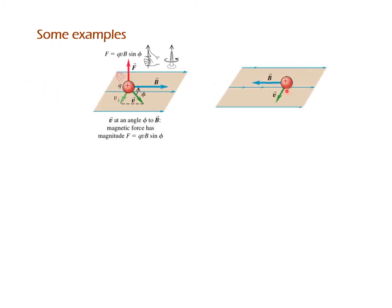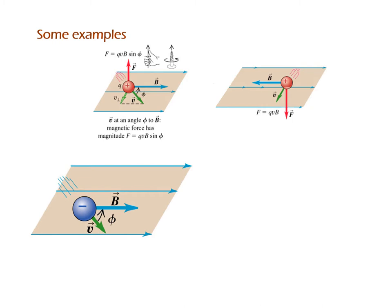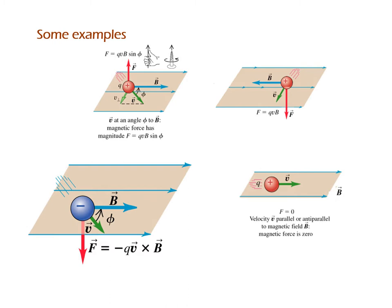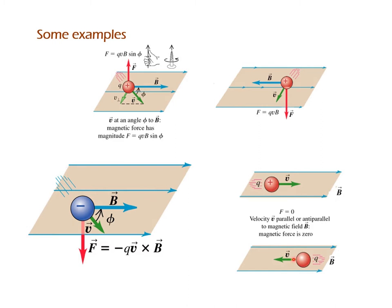Next, how about this other case in which the velocity is this way and the field is that way? You're going to have to turn your hand in a somewhat painful way, and then you're going to see that the force is going to be down. This next case is the same except we're now dealing with a negative charge — you do exactly the same but flip your answer at the end. And in the final cases where velocity is parallel or anti-parallel to the field, the angle is zero or 180, sine gives zero, so there is no force.